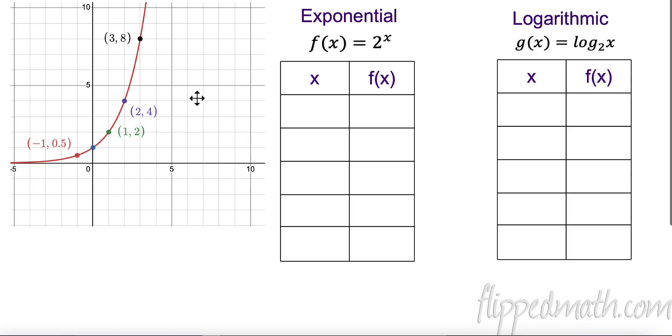So here we have an exponential function. Let's just write some of these points out so we know what they are. It's clear we have them right here. But so this is negative 1, 0.5 or one half, right. Then this point here is 0, 1.